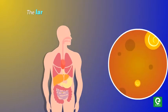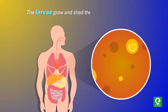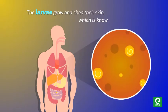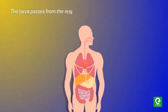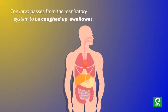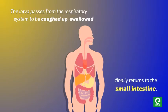In the lungs, the larvae grow and shed their skin, which is known as molting. After 3 weeks the larvae pass from the respiratory system, are coughed up, swallowed, and finally return to the small intestine.